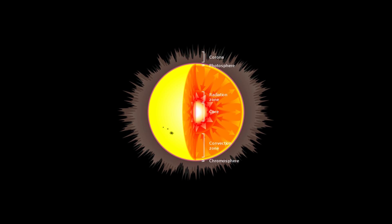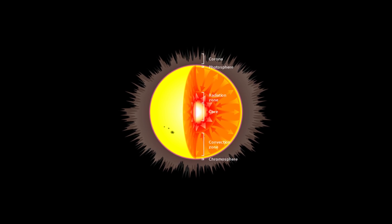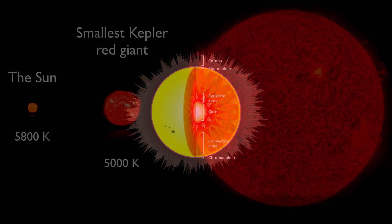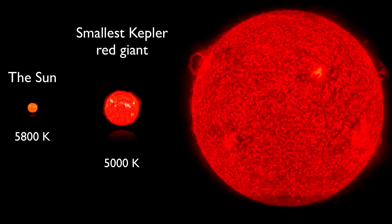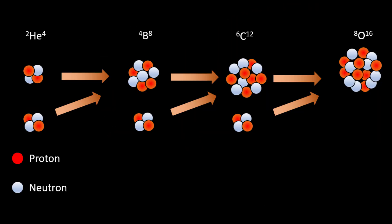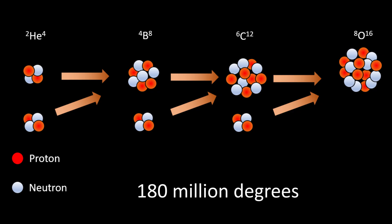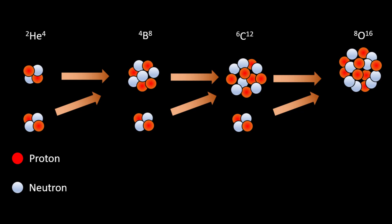Eventually, stars run out of hydrogen as helium accumulates in their cores. At this point, nuclear fusion stops. When this happens, the core of the star begins to collapse under its own gravity, causing temperatures to rise to unimaginable levels — above 180 million degrees Fahrenheit. It's at these high temperatures that nuclear fusion starts again. This time, fusing helium into heavier elements, including carbon, nitrogen, and oxygen.